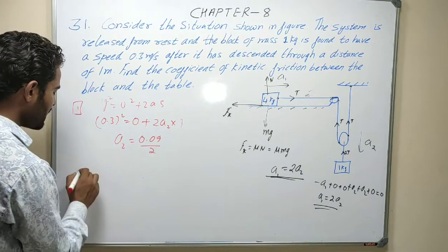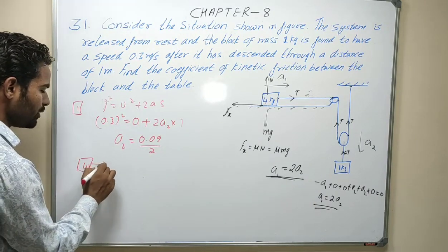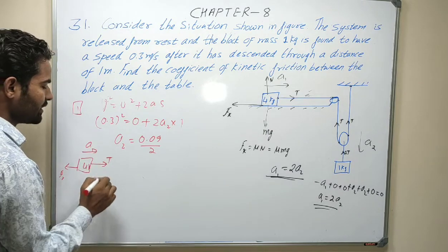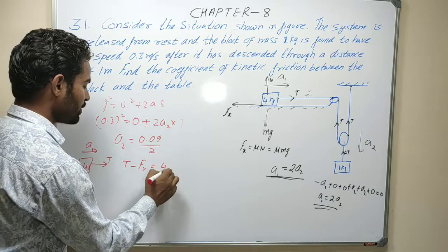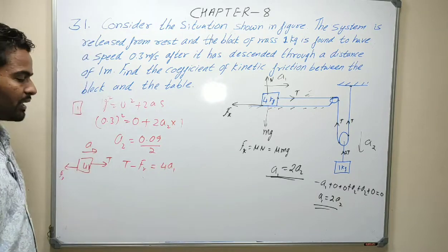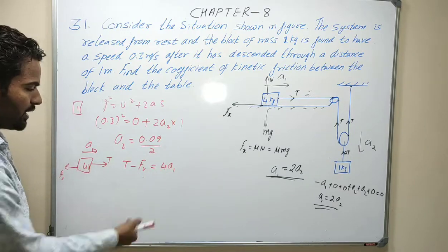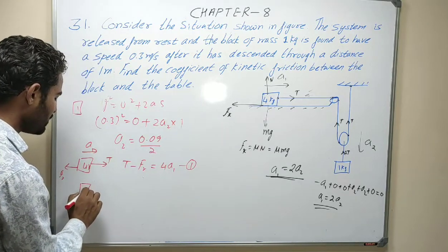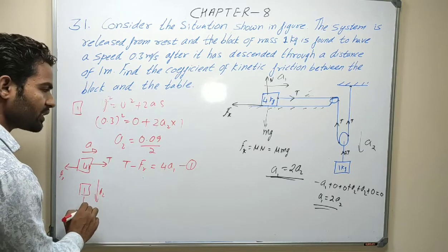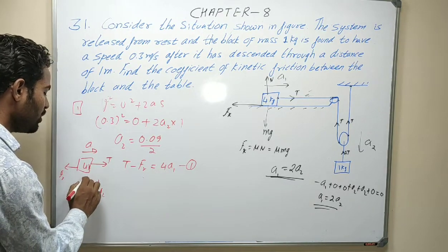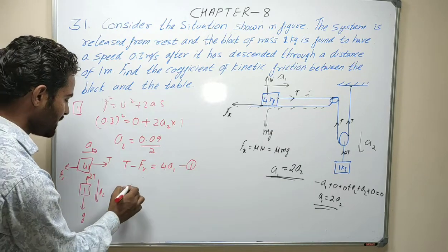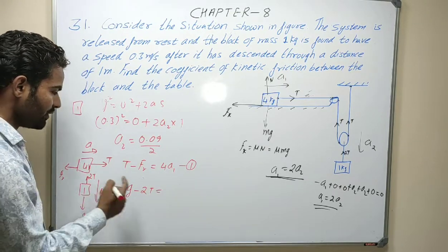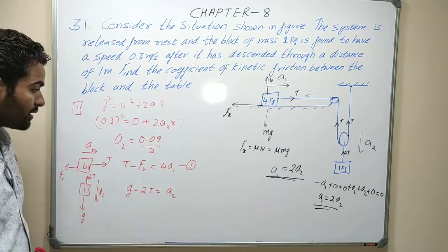Now apply FBD. For the 4 kg block: tension T acts forward and friction acts backward, so the equation is T minus friction equals 4 times A1. For the 1 kg hanging block: going down with acceleration A2, net downward force is mg, upward force is 2T, so the equation is mg minus 2T equals 1 into A2.